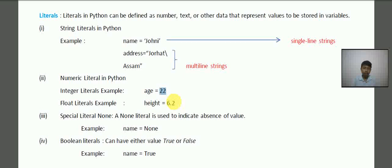means like 6.2, means the numbers which are in decimal expression. Then the next one is special literal None. Means None will be stored. Then here, a None literal is used to indicate absence of value.